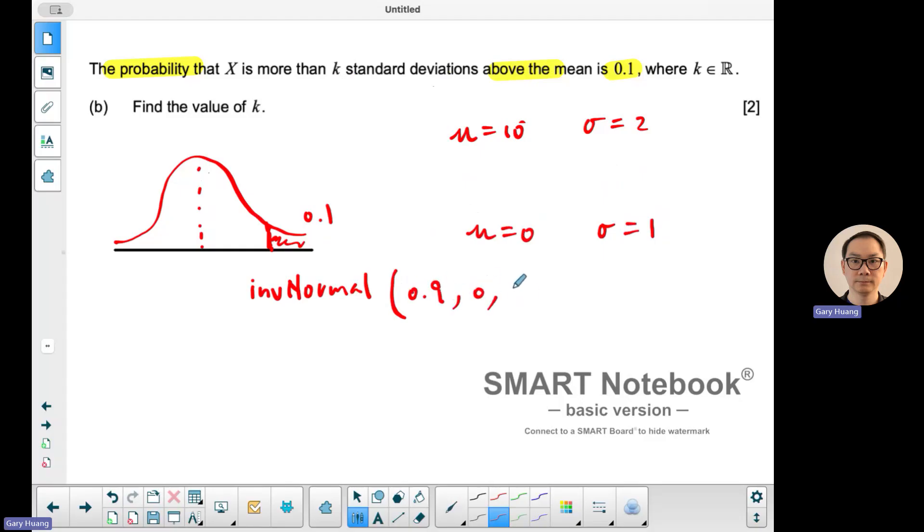The area would be 0.9, mean of 0, standard deviation of 1. Punch that in the calculator. And you should get, to 3 significant figures, round off to 1.28.